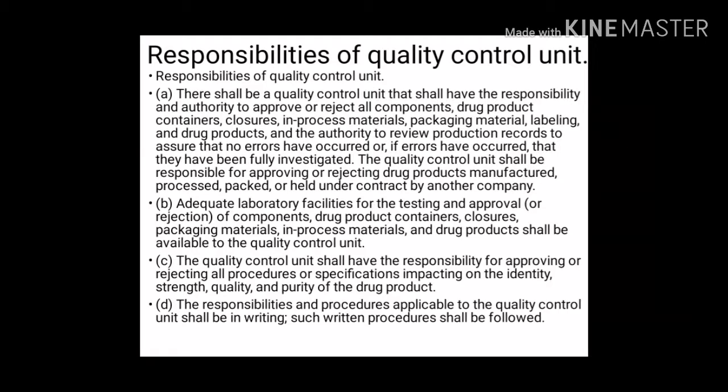Responsibilities of Quality Control Unit: There shall be a quality control unit that shall have the responsibility and authority to approve or reject all components, drug product containers, closures, packaging materials, in-process materials, and drug products, and the authority to review production records to assure that no errors have occurred, or if errors have occurred, that they have been fully investigated. The quality control unit shall also be responsible for approving or rejecting drug products manufactured, processed, packed, or held under contract by another company.